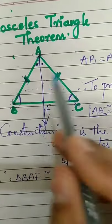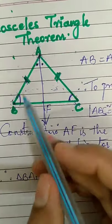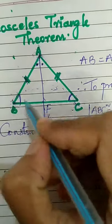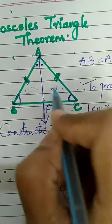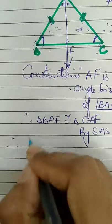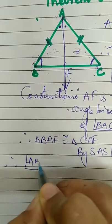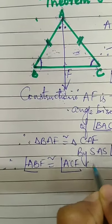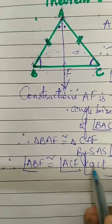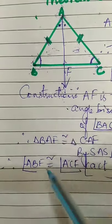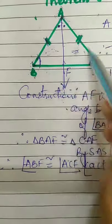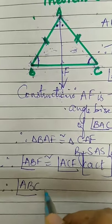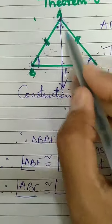If both the triangles are congruent, then I can say that angle ABF is congruent to angle ACF — corresponding angles of congruent triangles (CACT). So ABF congruent to ACF by CACT. And what is ABF and ACF? If I extend it, therefore angle ABF can be written as angle ABC, congruent to angle ACF written as angle ACB.